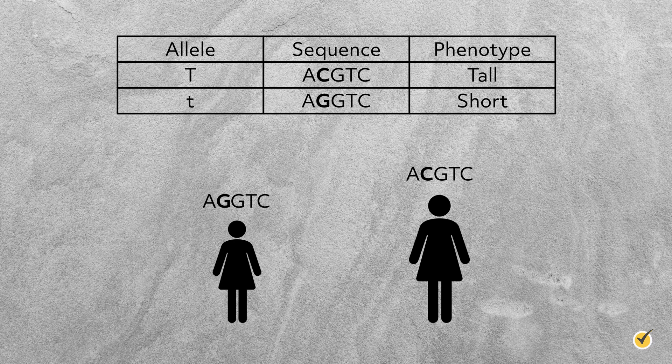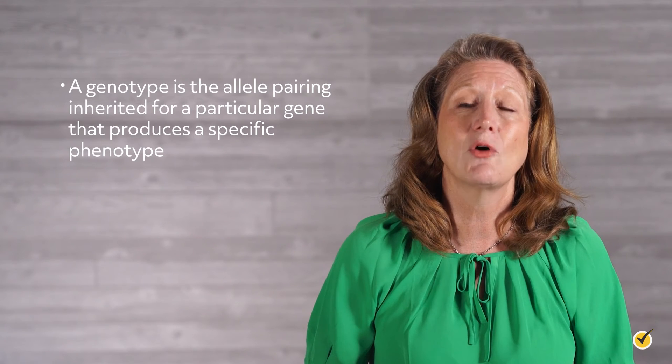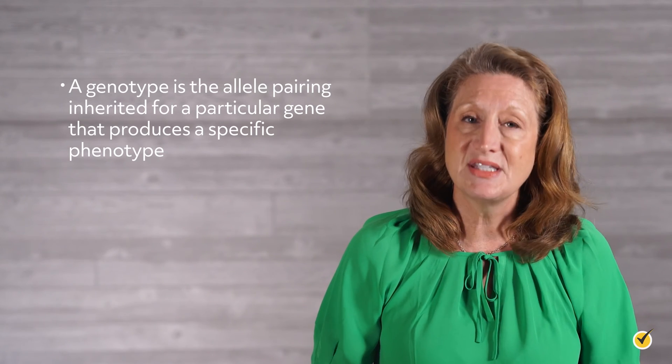If we want to know if the dumpy wing trait will appear in the offspring of a male and female fruit fly, all we have to do is look for this trait in their progeny. Sometimes just seeing the phenotype isn't enough — maybe we want to know the exact allele pairing that caused that trait. This is where the genotype comes in. A genotype is the allele pairing inherited for a particular gene that produces a specific phenotype. In reality, genotype refers to all the genes in an organism and the phenotype refers to all observable traits of an organism, but in practice they are usually used to refer to a single gene in question.